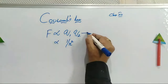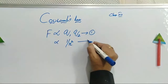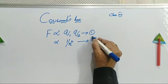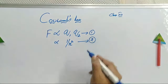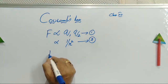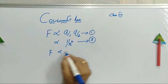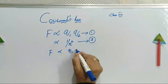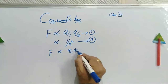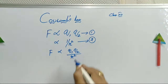This is the first statement. The second statement: force is directly proportional to the product of the two charges. It may be attraction or repulsion — if they are like charges, repulsion; if they are unlike charges, attraction. If I combine these two statements, F is directly proportional to Q1 Q2 by R square.